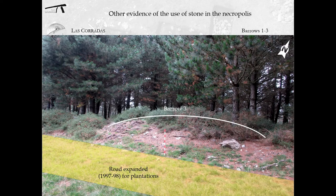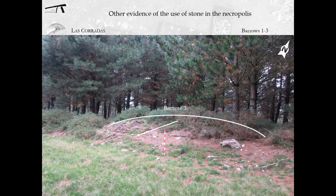These groups of tombs were more affected by plantations and three structures were partially destroyed by a road opened in 1997–1998. It is the case of barrows number one, two and three. As a result, today it is possible to see part of the interior of the tumulus scattered across the profiles left by the road in the south part. Clear evidence of stone appears in the profile and in the surroundings. The same types of processes were found on the other side of these three partially destroyed structures.